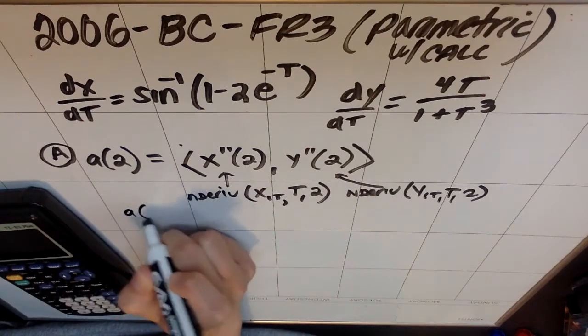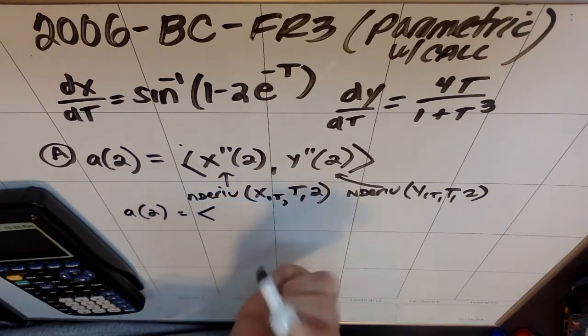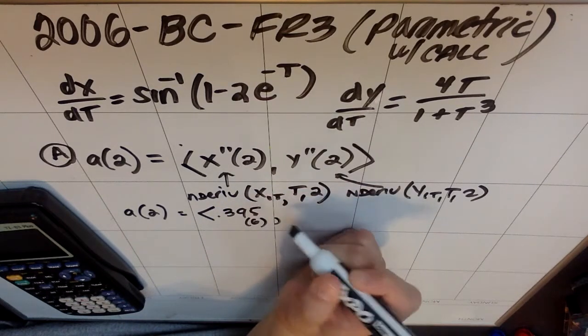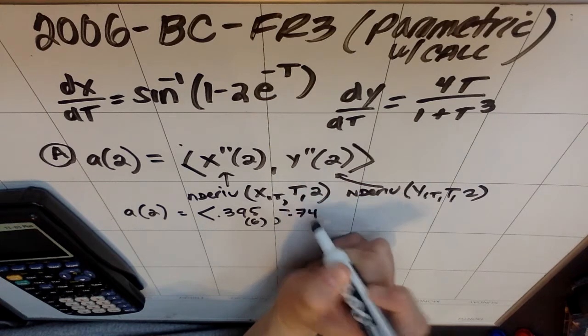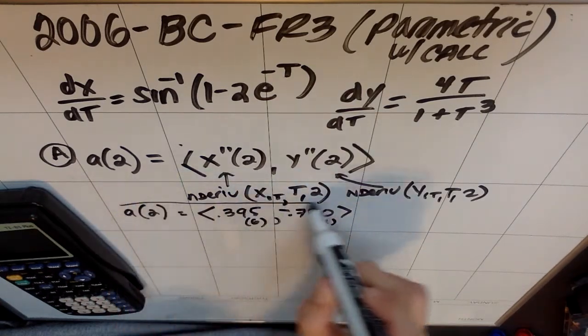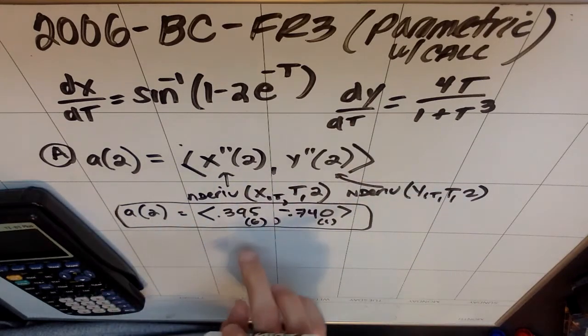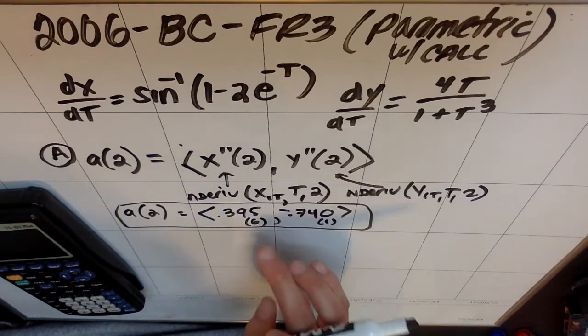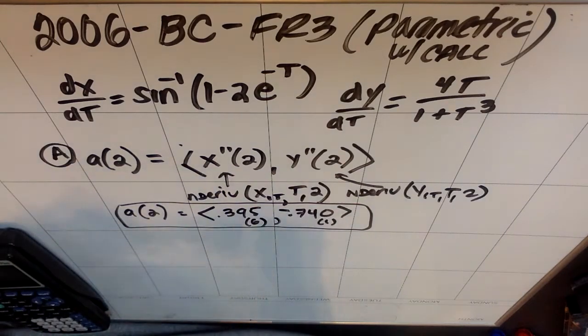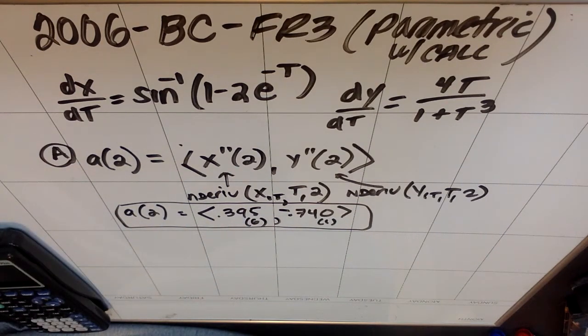So my A(2) is, in vector notation, 0.395 or 6 depending on if you round or truncate, comma negative 0.740 or 1 depending if you round or truncate. You don't have to write this second answer. I always write it so that I, as the person grading it, know if you are correct. So that was the first prompt. There are two prompts here though. When a part A has two prompts, we sometimes forget to do one of them.